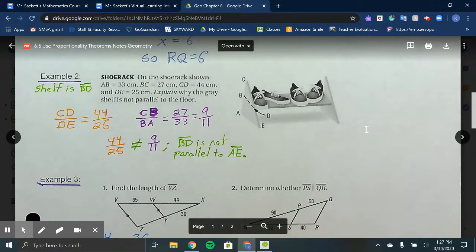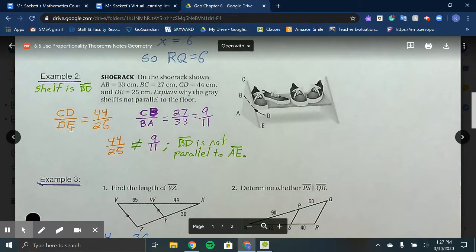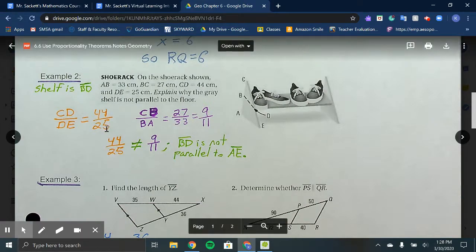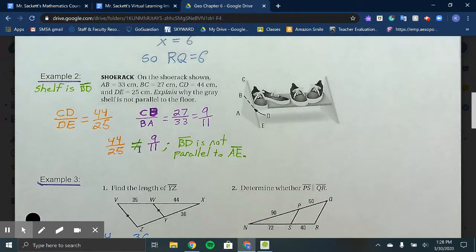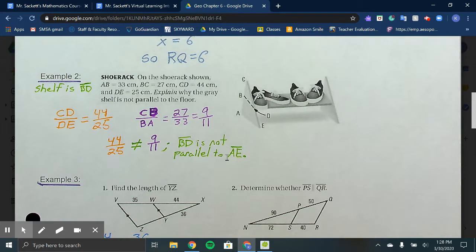What we'd want to check are the proportions. We have CD over DE, and on the back side, CB over BA, which you can see set up in purple. 44 over 25 is not the same as 27 over 33. They do not simplify the same. So BD is not parallel to AE, explaining why the shelf is not parallel to the floor.